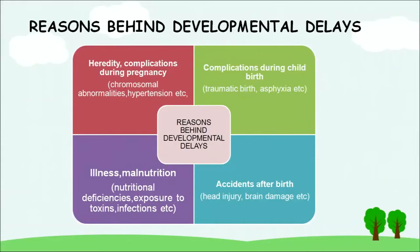Now that we understand developmental delays and the importance of achieving milestones on time, it is important to understand the reasons behind developmental delays. One reason could be heredity — at the level of genetic or chromosomal makeup there are certain complications. The human body is made up of 46 chromosomes: 23 from the mother and 23 from the father. Sometimes chromosomes are more than 46, which leads to detrimental growth and development issues — for instance, Down syndrome.